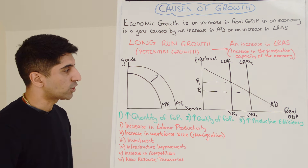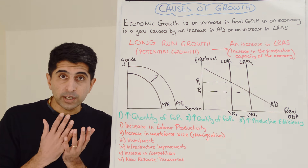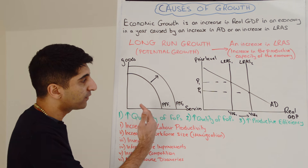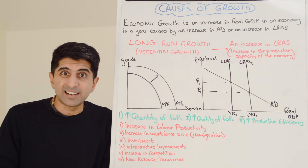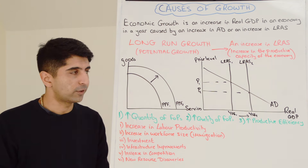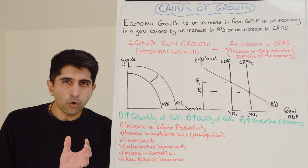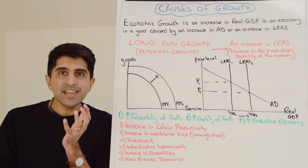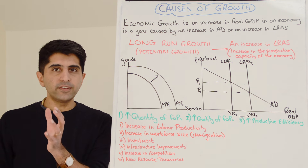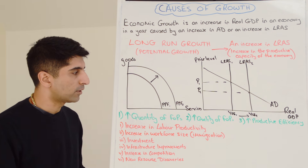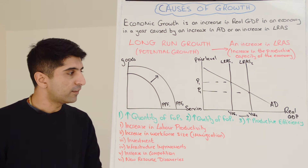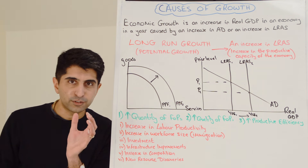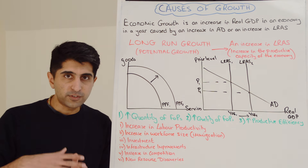We can also use a PPF diagram to show long-run growth — simply by showing an outward shift of the curve to PPF2, representing an increase in LRAS. There are three reasons why the LRAS curve can shift to the right: an increase in the quantity of factors of production, an increase in the quality of factors of production, or an increase in productive efficiency — meaning a reduction in long-run costs of production for firms.